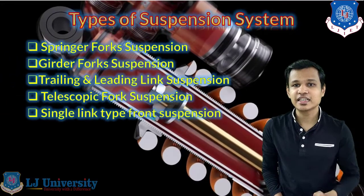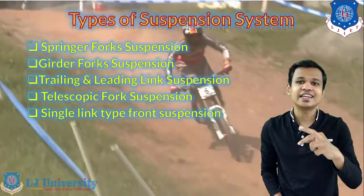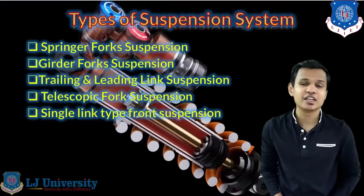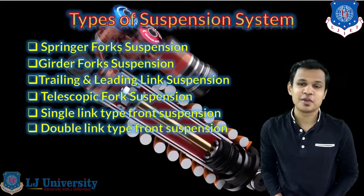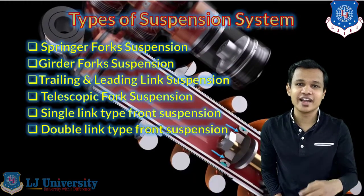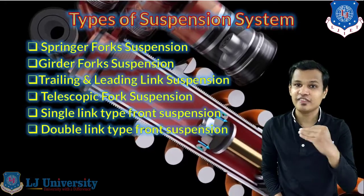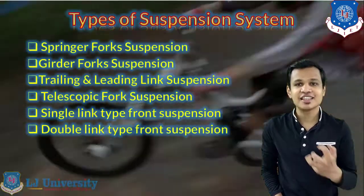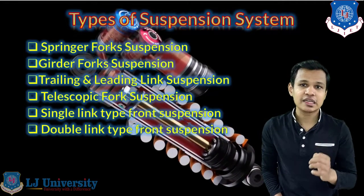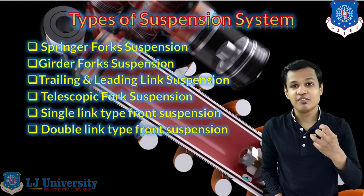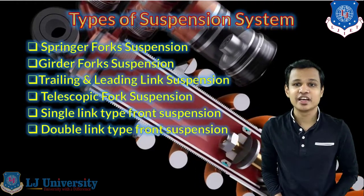Next is the single link type suspension system, generally used on the front side. It provides one A-type or wishbone link on which the suspension is connected to the steering system. The double link type suspension system has two parallel links, similar to the double wishbone system seen in four wheelers. These two systems add extra weight and more components, but provide maximum comfort, making them suitable for higher-end vehicles.